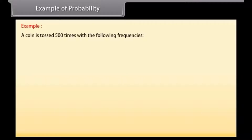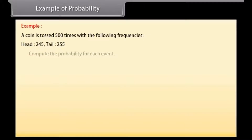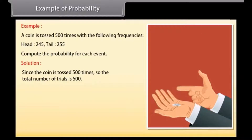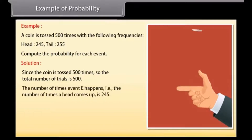Example: a coin is tossed 500 times with the following frequencies — head: 245, tail: 255. Compute the probability for each event. Solution: since the coin is tossed 500 times, the total number of trials is 500.